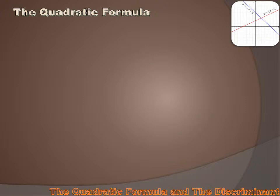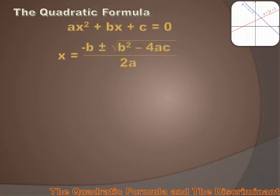You can always use the quadratic formula to solve any quadratic equation. The quadratic formula refers to the standard generic quadratic equation ax squared plus bx plus c. It uses that a, that b, and that c, and puts them together this way: x, or our solutions, equals minus b plus or minus the square root of b squared minus 4ac all over 2a.